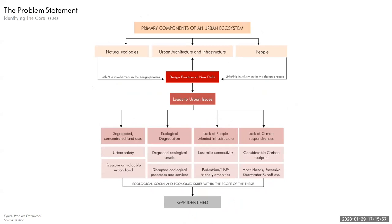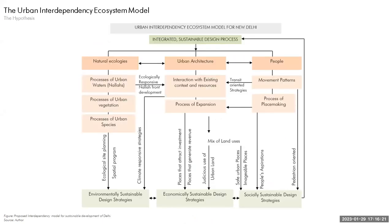This problem framework establishes that these components are dependent on one another, and the issues Delhi faces today emerge from the fact that design processes followed there are largely monodisciplinary and have very little involvement of two major ecosystem components — hence the resulting city fabric is not sustainable. This project proposes a hypothesis called the Urban Interdependency Ecosystem Model for New Delhi, which establishes interdependencies among various processes of the three identified components, analogous to the natural mechanism of sustainability, representing a closed loop.